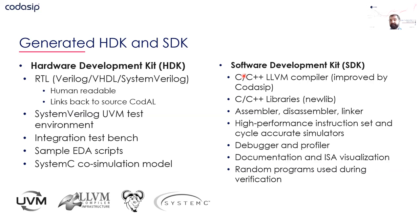The Software Development Kit (SDK) includes a C/C++ LLVM-based compiler, libraries such as Newlib or C++ libraries, programming tools, and different instruction set simulators — both fast high-performance ones and a cycle-accurate simulator that matches the RTL cycle by cycle. There are also debuggers, profilers, a documentation generator, ISA visualization, and for verification, a random program generator. These are the highlights of what Studio generates from a single processor description.